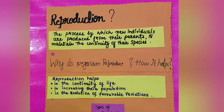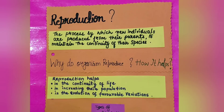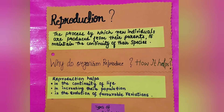Reproduction ensures that organisms of a species continue to live even after the death of the parent organism. So continuity of life will be maintained.